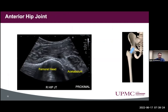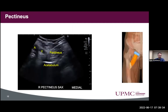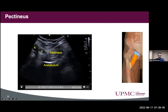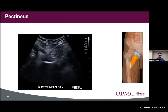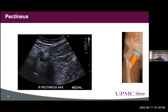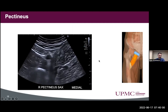We started with the hip joint and viewed the femoral head and acetabulum. We weren't seeing any effusion or cortical irregularity on this view. Next, we looked at the pectineus. To find it, locate the femoral artery and vein and move more medially — the pectineus will be right above the acetabulum near its origin, making its way over to the proximal femur. Acoustic enhancement through the vasculature makes it a little challenging to see, but for this athlete, the pectineus muscle appeared normal.